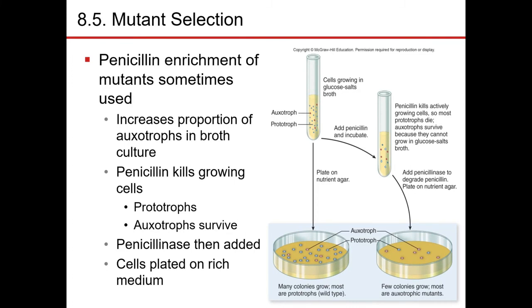Another method for mutant selection is penicillin enrichment. The term enrichment is used because it increases the percentage or probability of the auxotrophs versus the prototrophs — it increases your chances of picking up the mutant versus the wild type. This method uses the antibiotic penicillin, which is why it's called penicillin enrichment.